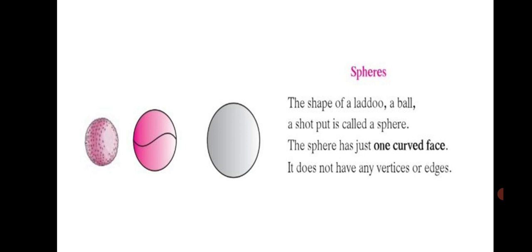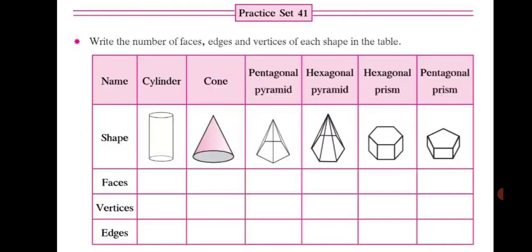Now that you are familiar with the different 3D objects and figures, we shall start with Practice Set 41. You have to write the number of faces, edges and vertices of each shape in the table. The different figures given to us are cylinder, cone, pentagonal pyramid, hexagonal pyramid, hexagonal prism and pentagonal prism.